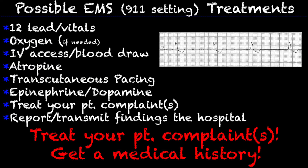So now that we know what causes it, what it looks like, and the signs and symptoms, let's talk about possible 9-1-1 EMS setting treatments for these patients. Obviously get your 12-lead, get your vitals, oxygen if needed if they're satting low, IV access, blood draw. If they are symptomatic, you can go down your symptomatic bradycardia algorithm — atropine, transcutaneous pacing if indicated, epinephrine or dopamine if you are going to go down that route.